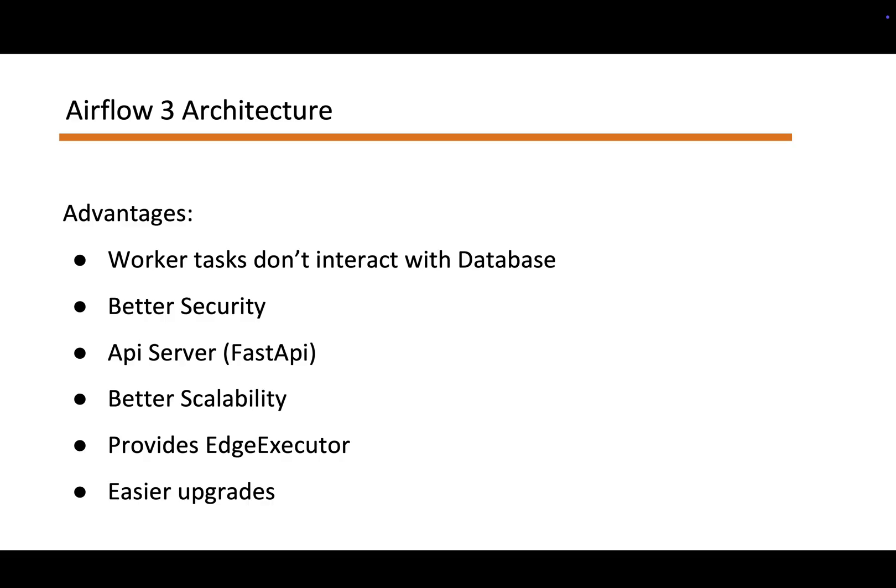Finally, upgrades are easier. With services cleanly separated — the API server, user interface, DAG processor, and workers — you can now roll components independently, pin provider versions, and adopt new features without a big-bang migration. Smaller, safer upgrades means less downtime and faster iterations.